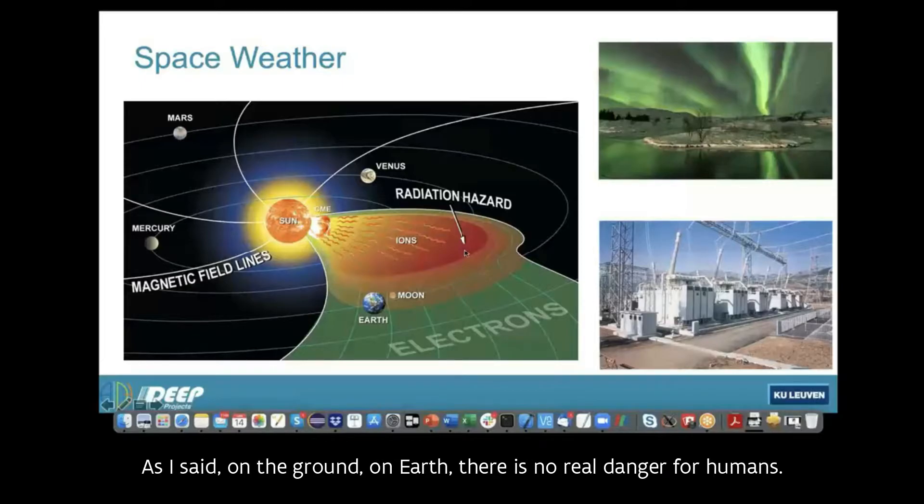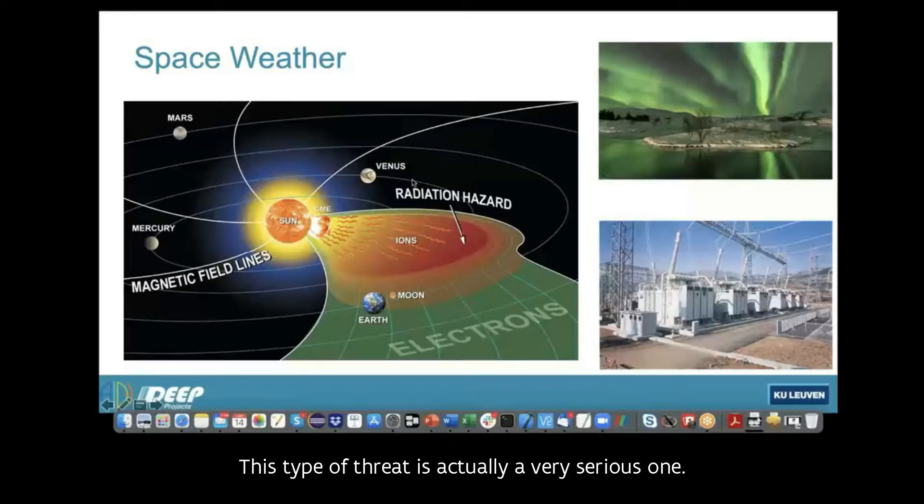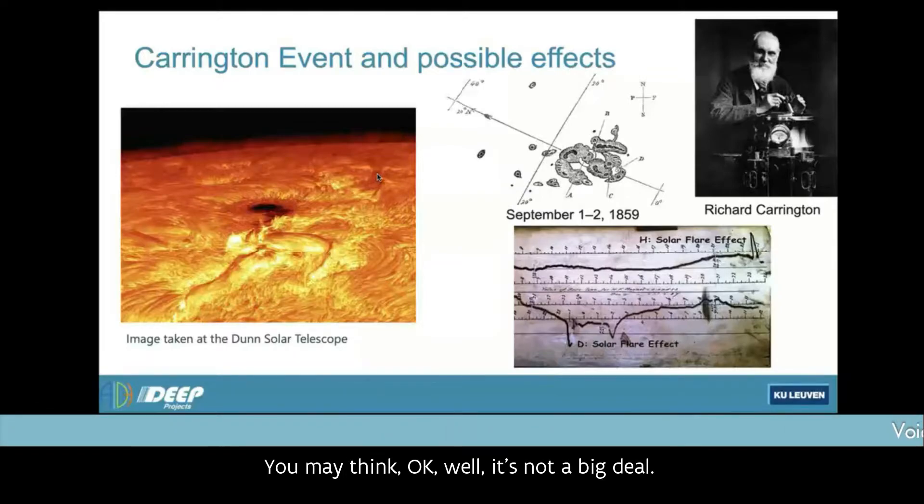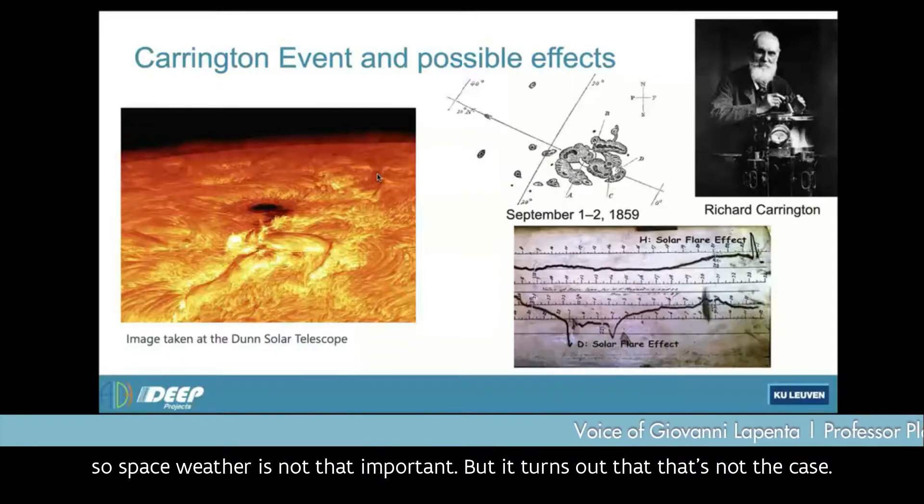As I said, on the ground on earth, there is no real danger for humans. This type of threat is actually a very serious one. You may think it's not a big deal, we are dealing with a much more serious problem right now. So space weather is not that important. But it turns out that's not the case.